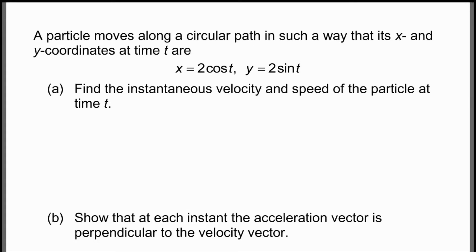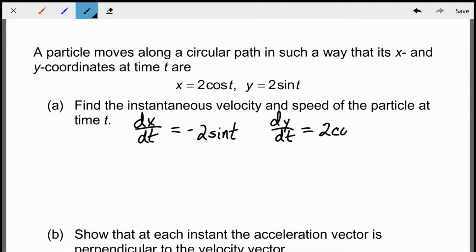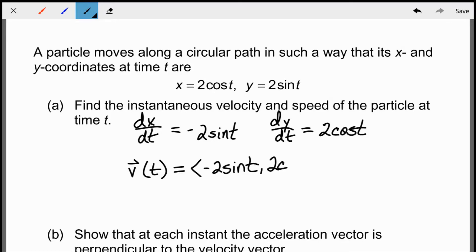To find the velocity vector function, remember that just because we're given parametric equations doesn't mean we're not dealing with vectors. My i component is 2cos(t) and my j component is 2sin(t), so I take the derivatives of both. The derivative of 2cos(t) is −2sin(t), and the derivative of 2sin(t) is 2cos(t). So my velocity vector is −2sin(t) in the i direction and 2cos(t) in the j direction.